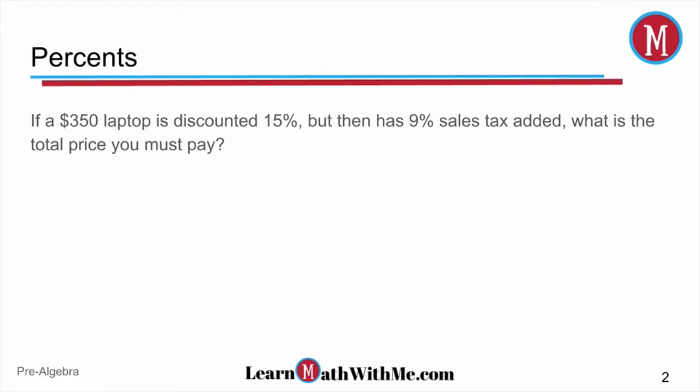So basically you've gone to the store, you see a laptop you want for $350, and you get a 15% discount but have to pay 9% tax. Let's start by looking at the discount. We have $350 for the laptop and we're going to take away 15%. Remember, to work with a percent in our problem, we need to change it to a decimal by moving the decimal point two places to the left. So 15% becomes 0.15, and we get $52.50.